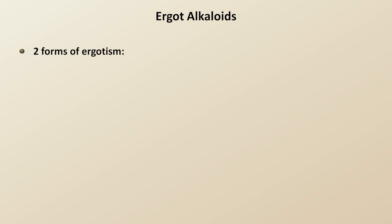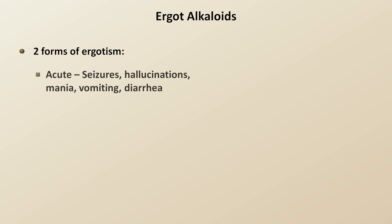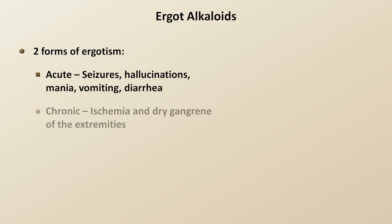What exactly do the naturally occurring ergot alkaloids actually do in the human body? They cause a disease called ergotism, which has two fairly distinct forms. In the acute form, in which the neurotransmitter effect of these compounds predominates, the primary symptoms are seizures, hallucinations, mania, vomiting, and diarrhea. In the chronic form, in which the vasoconstricting effects predominate, the primary symptoms are related to ischemia and the development of dry gangrene of the extremities.